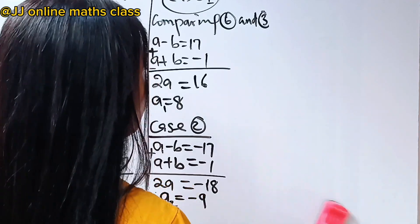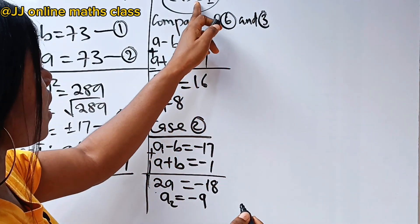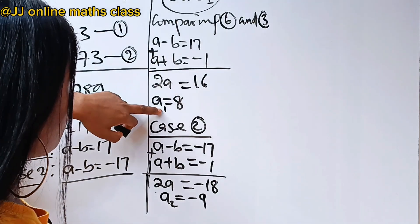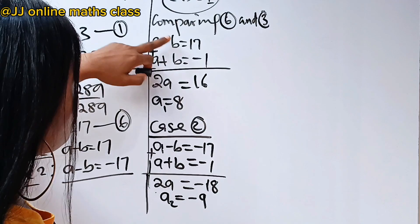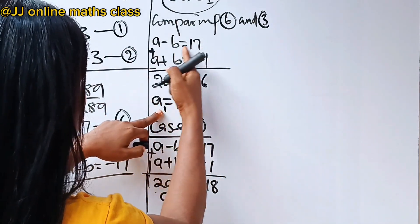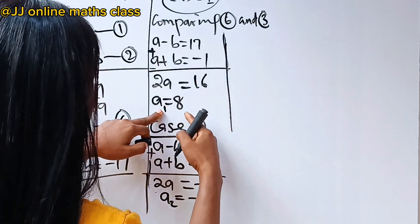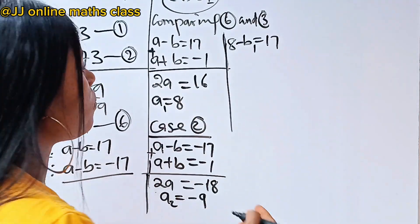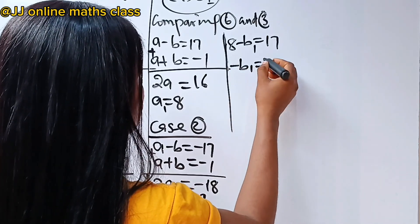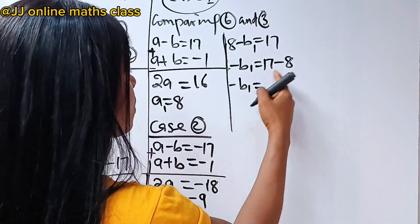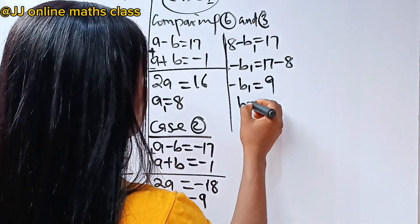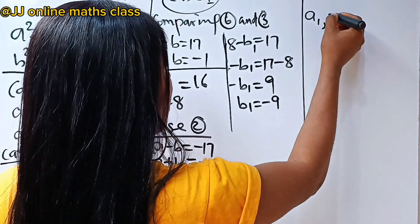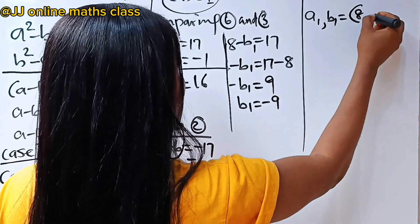Now let's find b1 and b2. For case 1, a1 is 8. Substituting into a minus b equals 17: 8 minus b equals 17, so minus b1 equals 17 minus 8 equals 9, meaning b1 equals minus 9. So the first solution is a1 equals 8, b1 equals minus 9.